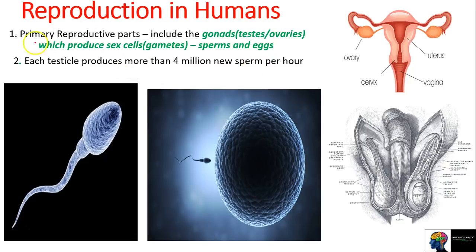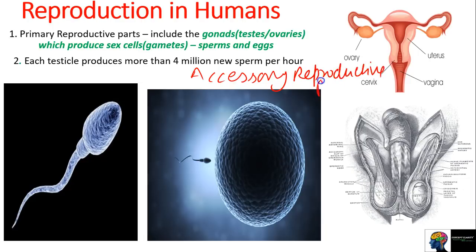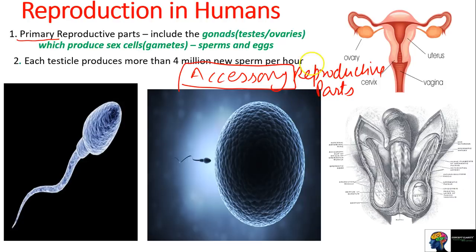After the primary reproductive parts, there are also accessory reproductive parts in humans. If some are called primary, then there must be secondary ones too - but instead of secondary, these are called accessory reproductive parts. Accessory reproductive parts are those parts that help in the meeting of sperm and eggs.